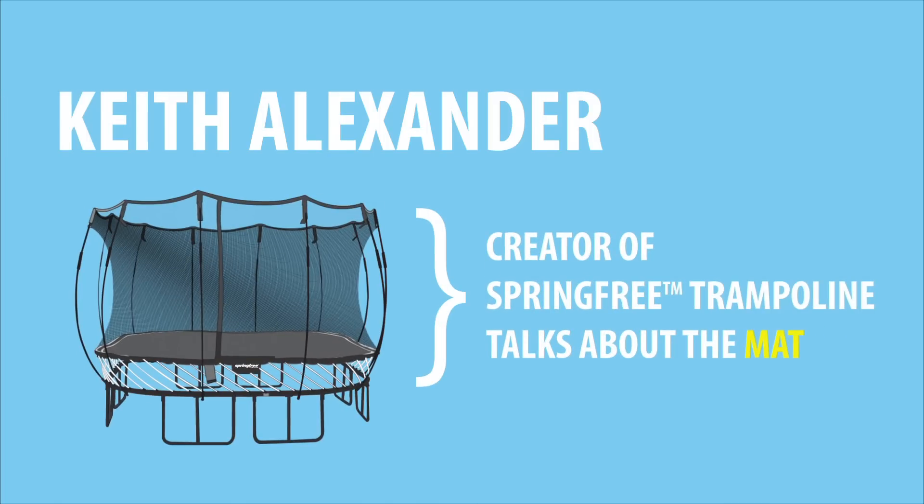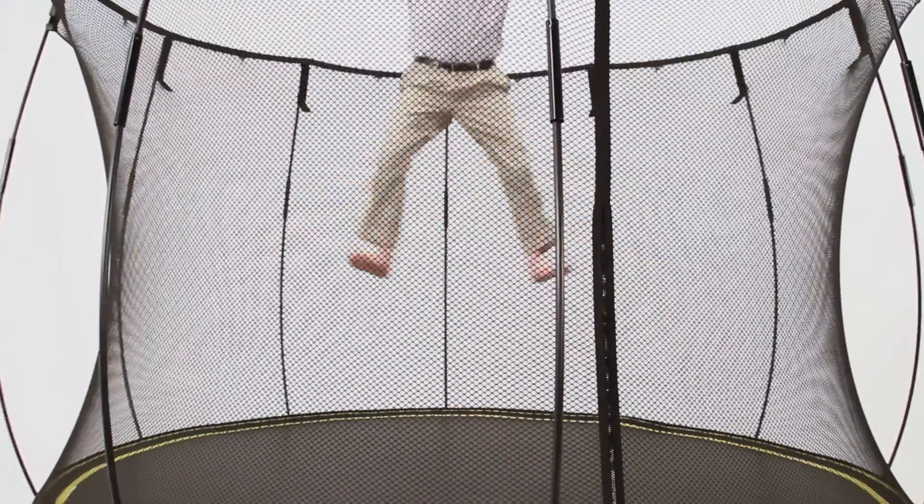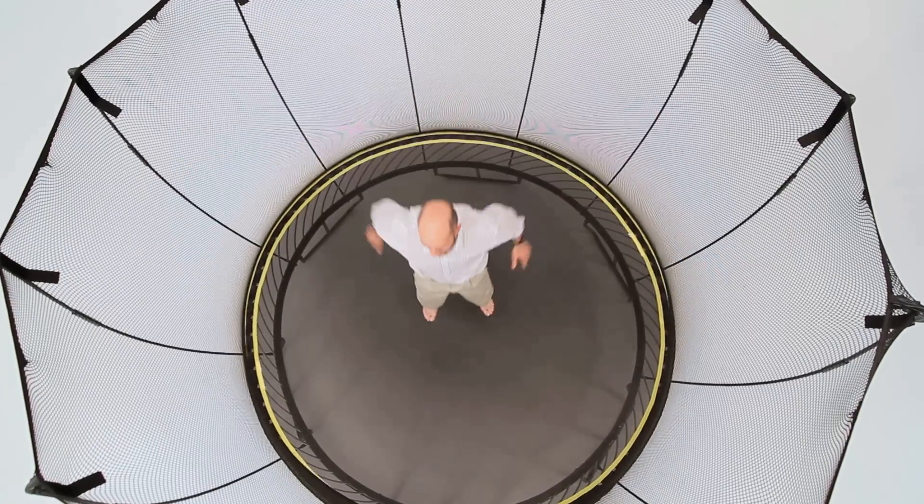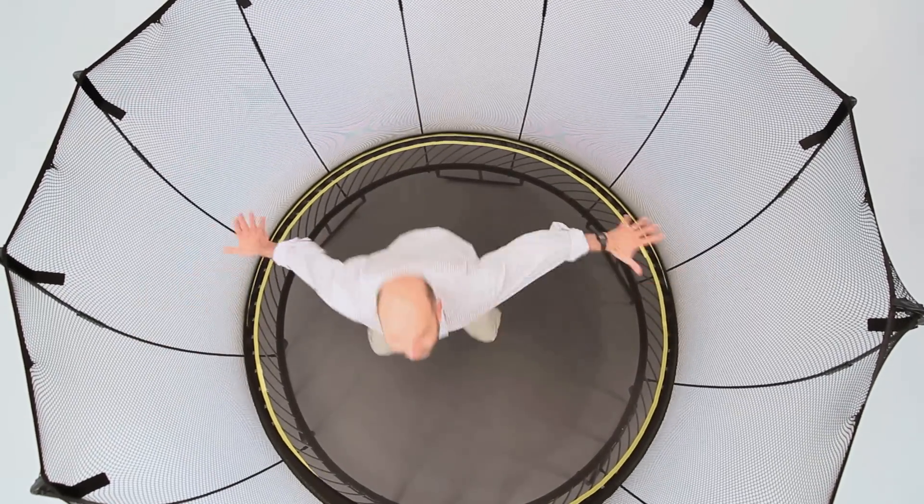The Springfree Trampoline mat is a polypropylene material that's used on all domestic trampolines. It goes through quite a rigorous process of calendaring and its standard of UV resistance is it passes a 5,000 hour test which is one of the most rigorous tests that they ever do on materials.